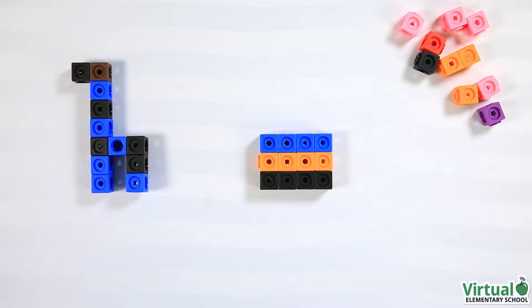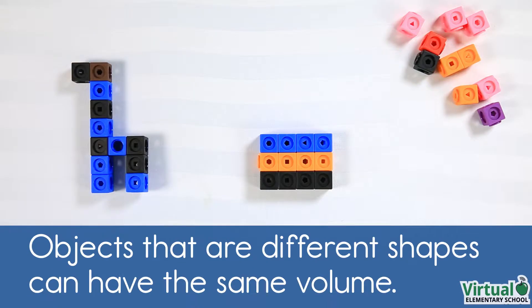Wait a second! The volume of this giraffe and the volume of this prism are 12 cubic units. That's interesting. Objects that are different shapes can have the same volume.